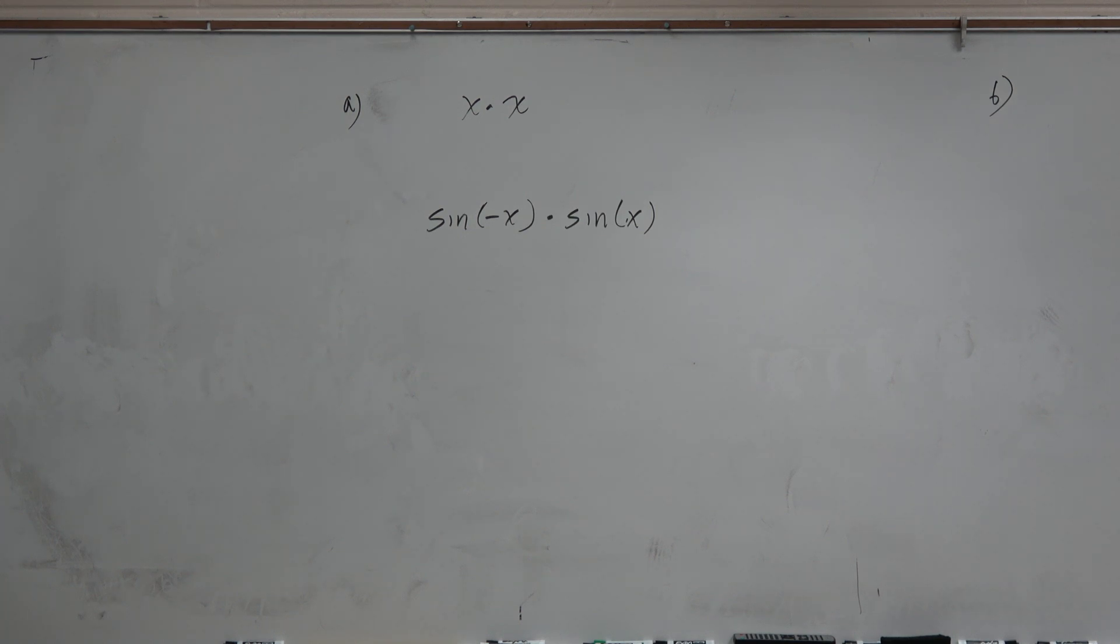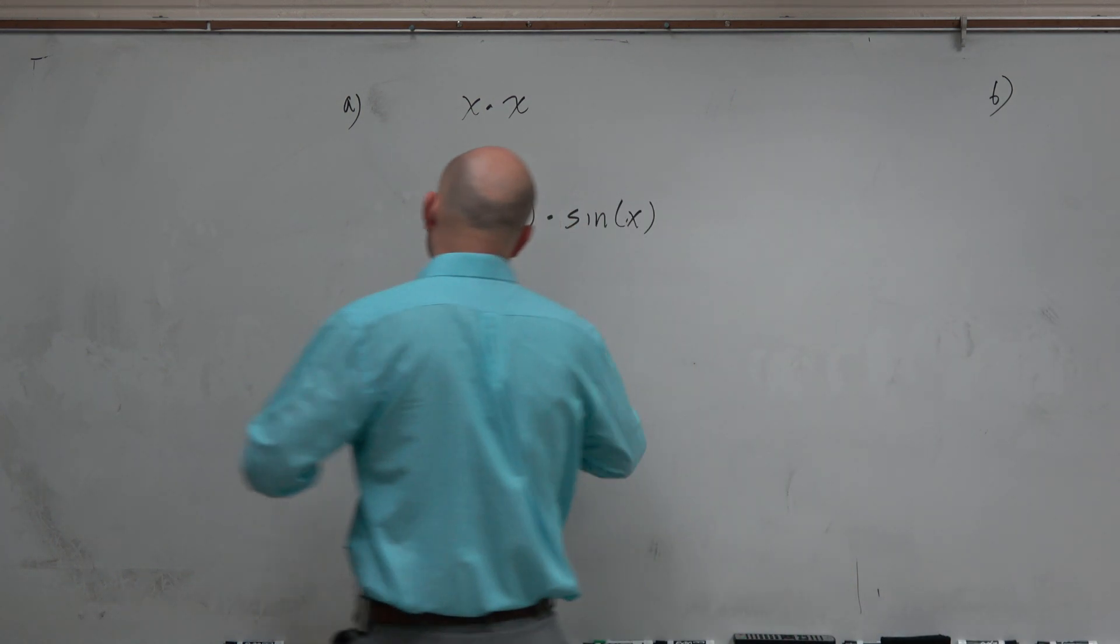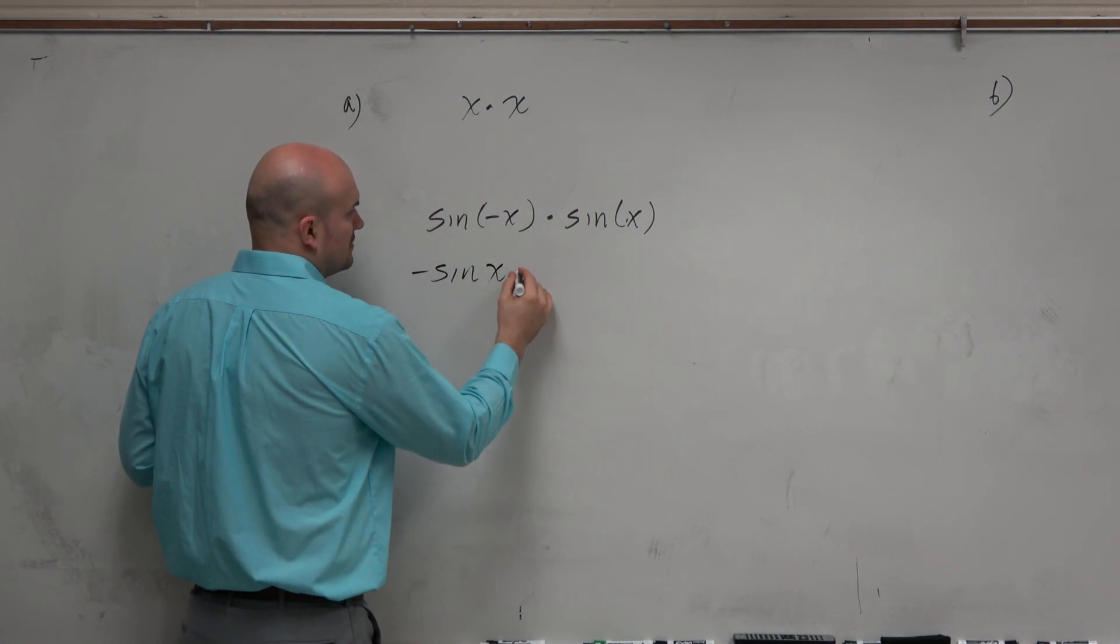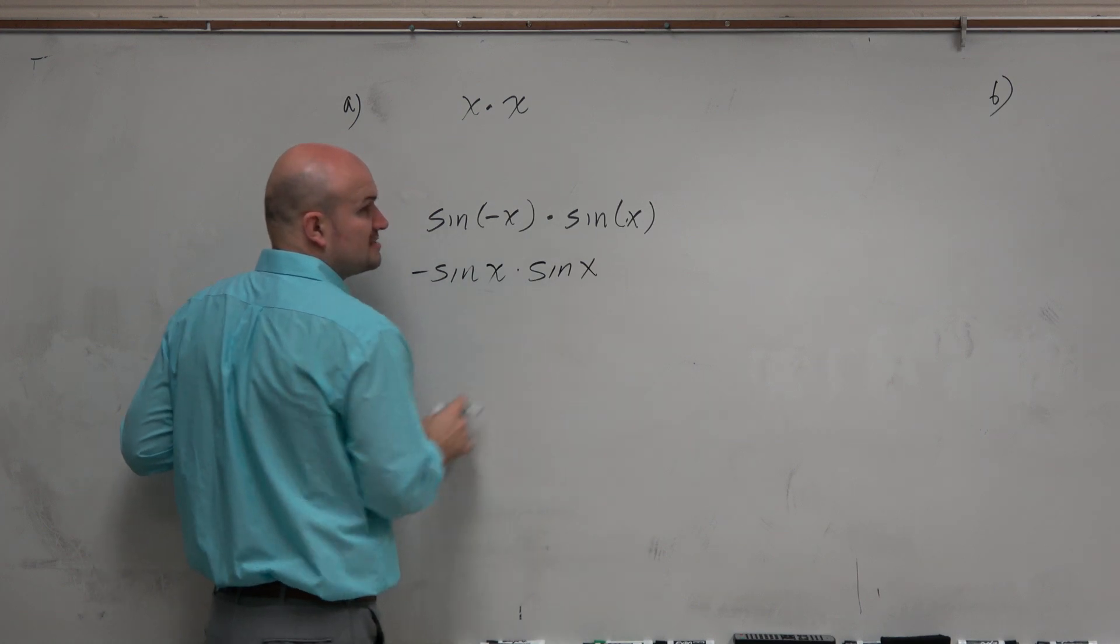Just recall, sine is an odd function. So sine of negative x is negative sine of x times sine of x.